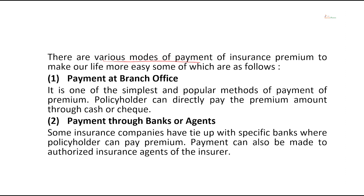There are various modes of payment of insurance premiums. Number one: you can choose to make payment at the branch office of the insurance company — one of the simplest and popular methods — where policyholders can directly pay through cash or cheque. Second mode is payment through banks or agents. Some insurance companies have tie-ups with specific banks where policyholders can pay premium. Payment can also be made to authorized insurance agents who will deposit that amount and issue a premium receipt.